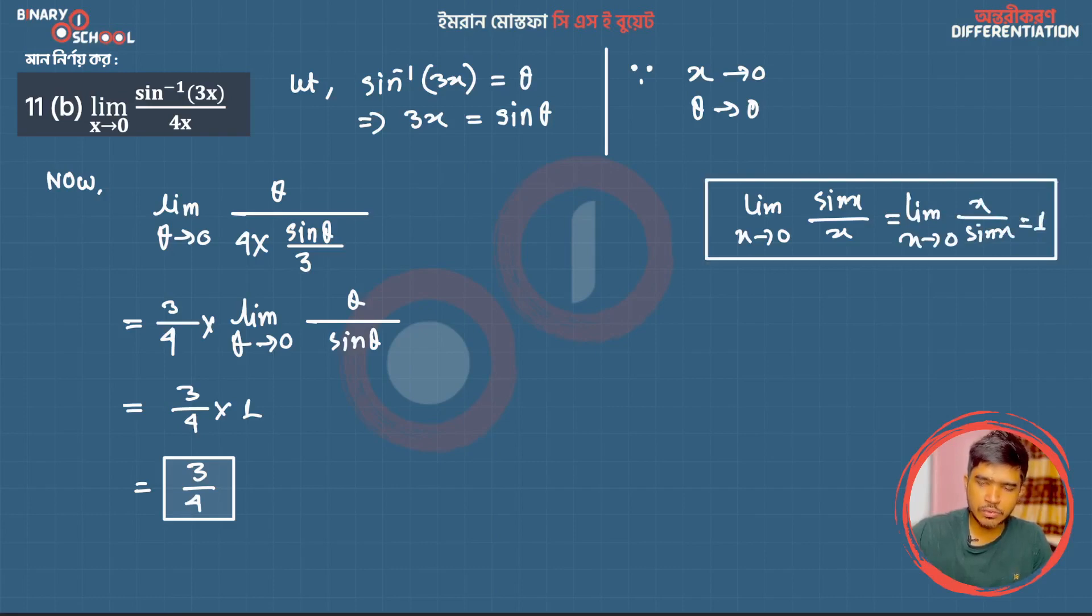we use the property that sin x by x when x tends to 0 equals 1. So the final answer is 3 by 4.